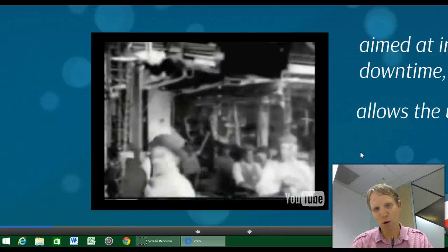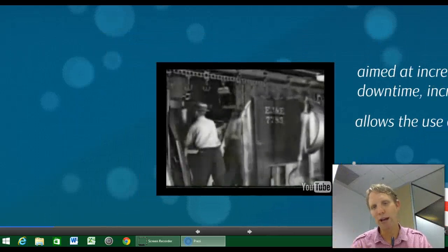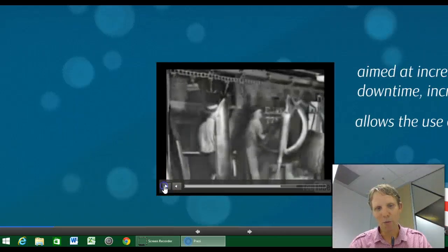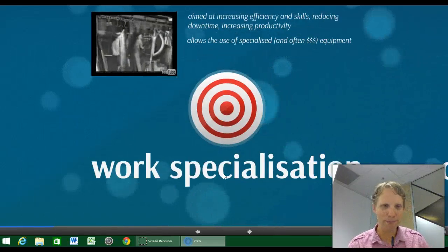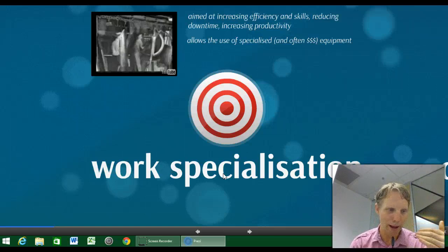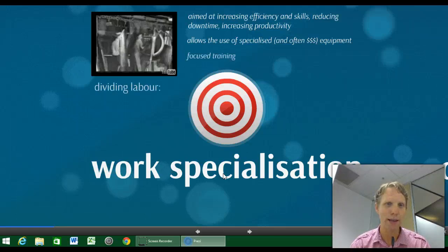Ford dealt with this problem very effectively by literally doubling wages. Whereas he was getting a great deal of staff turnover in these early days of introducing automation and the conveyor belt system, once he doubled the wages there was a lot less complaint within the Ford Motor Factory. People just tolerated it for the great wages they could get relative to the wages of the time.